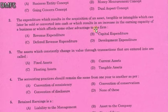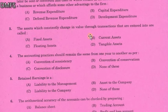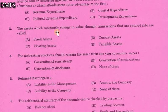Third: the asset which constantly changes in value through transactions — continuously changes in value. The answer is option C, floating asset.